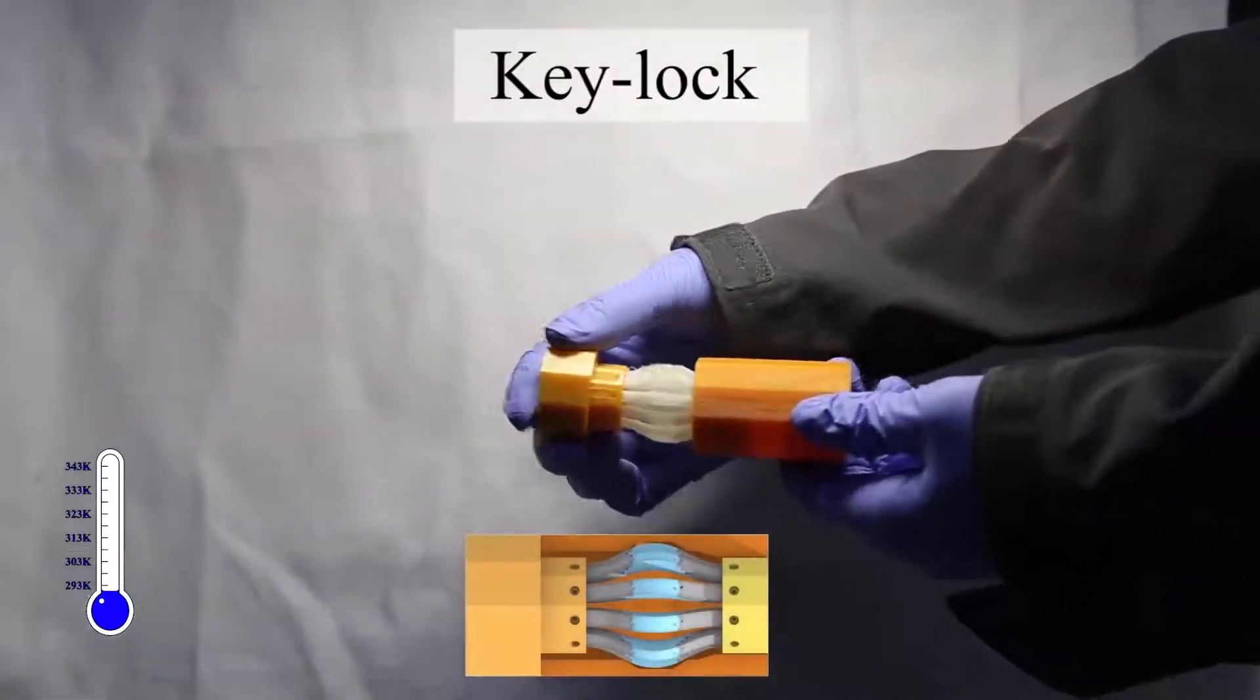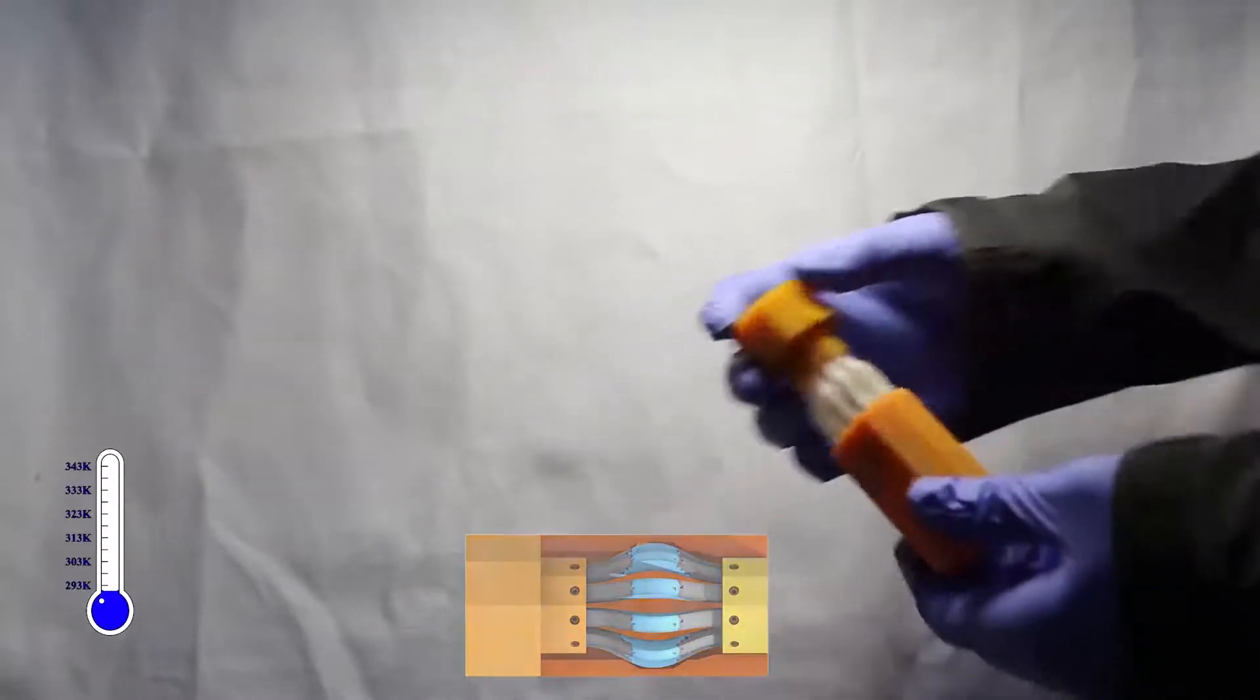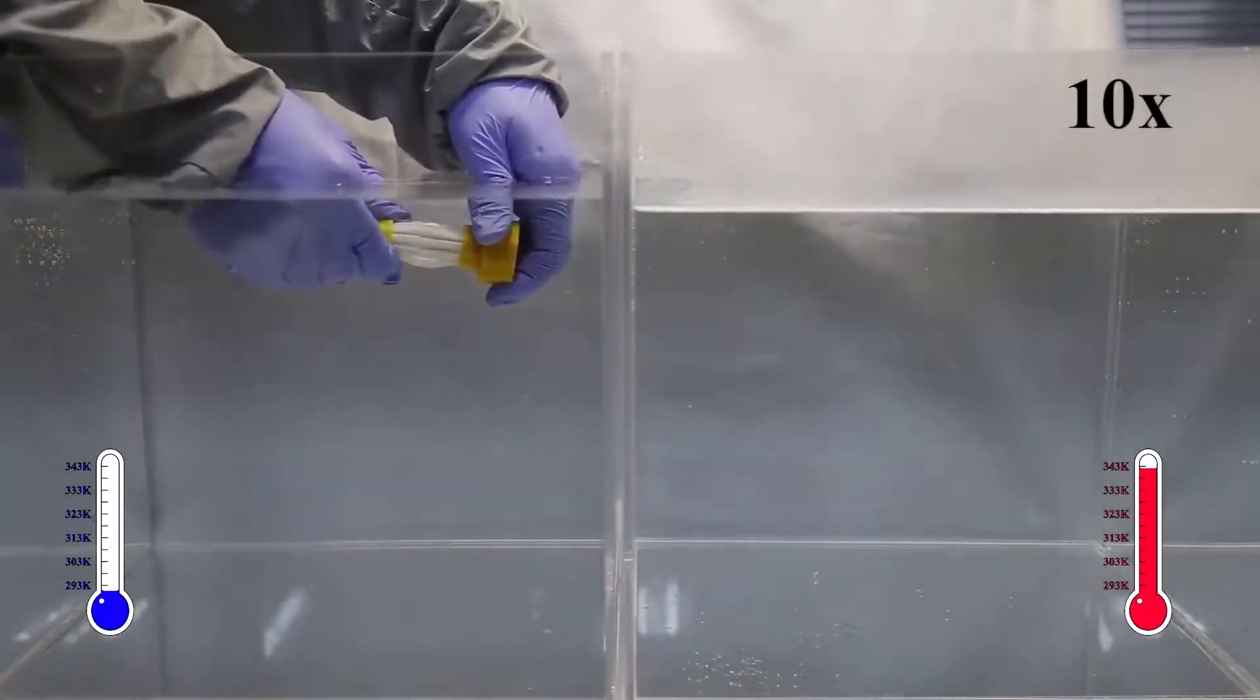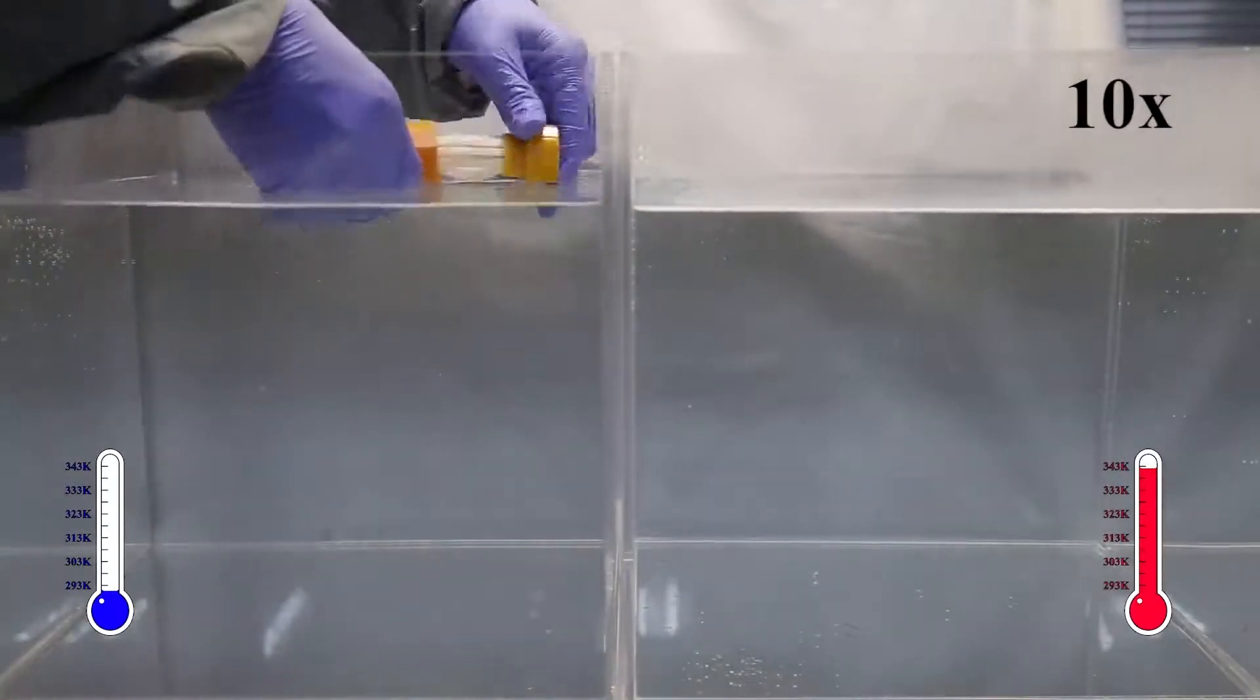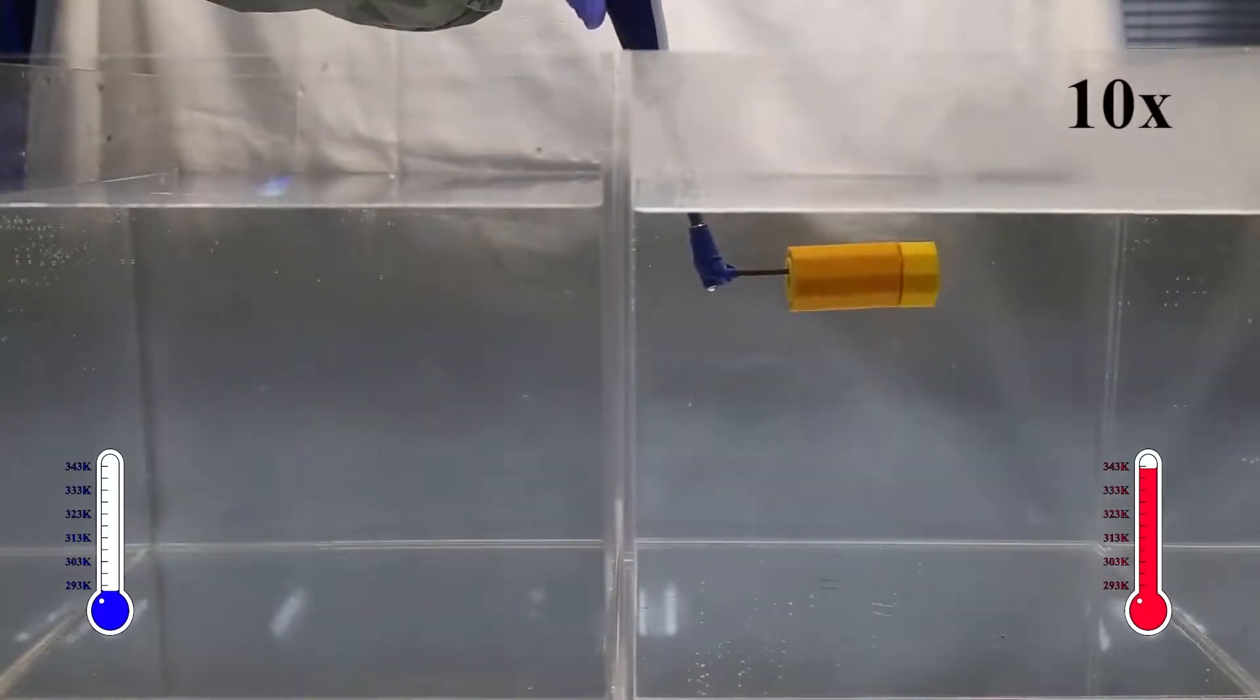Another application is the smart key lock. The key does not fit into the lock at the beginning. After being heated and deformed, the key is inserted into the lock. Then the reheating and cooling process lock the system.